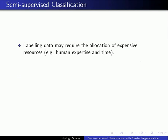In a broad sense, semi-supervised classification consists of learning from both labeled and unlabeled data. Labeling data may require the allocation of expensive resources like human expertise and time, and all of these resources can be expensive. Sometimes unlabeled data, which is data produced without a target, without a desired output — which is the label — can be quite cheap and easy to obtain.